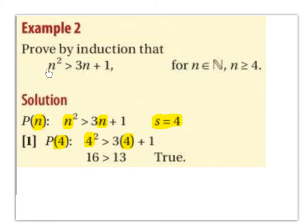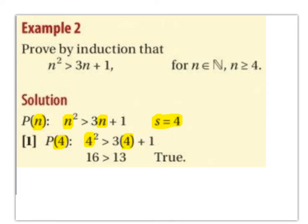Prove by induction that n² > 3n+1, for n ∈ ℕ where n ≥ 4. So P(n) is n² > 3n+1, where s = 4. Step 1: P(4) gives 4² > 3(4)+1, i.e. 16 > 13. This is true.